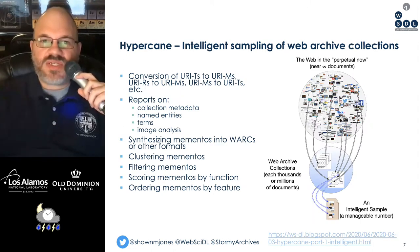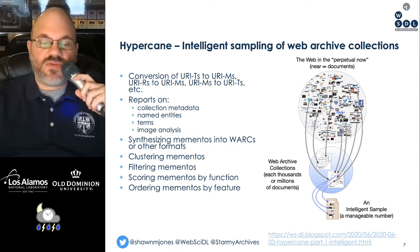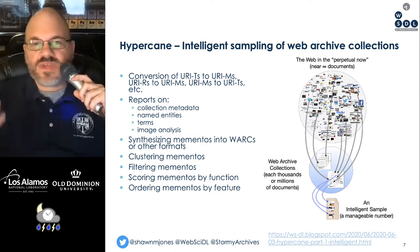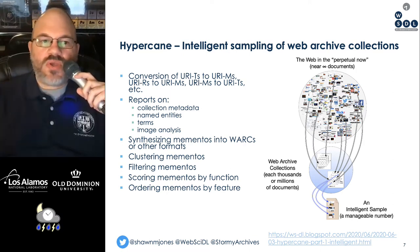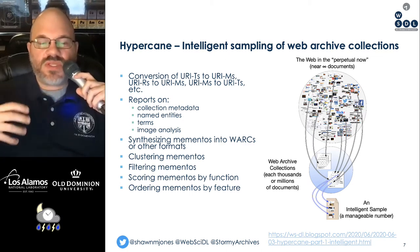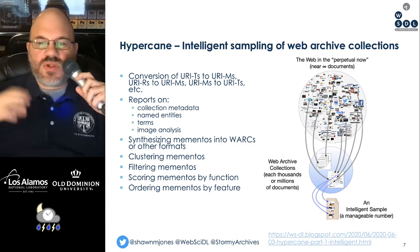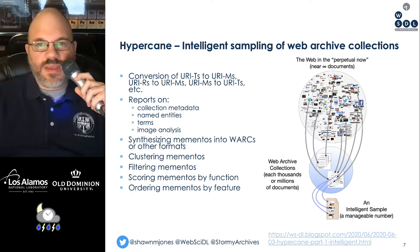Hypercane provides intelligent sampling of web archive collections. It converts from TimeMaps to URITs and extracts mementos to get URIMs. It can convert from URIRs to URIMs and from URIMs to find URITs, using the memento protocol to find all of these objects. It also provides reports on collection metadata, named entities, terms, and images found in mementos. It can synthesize mementos into works and other formats, cluster and filter mementos, score them by function, and order them by feature. Hypercane is able to do a lot more than what we use it for in Sherry, but it is key to making this whole process work.